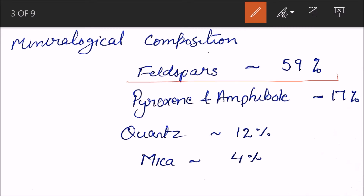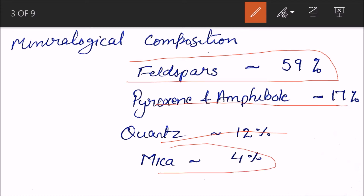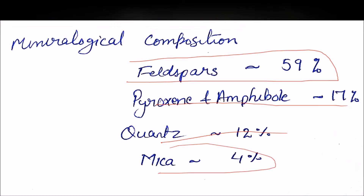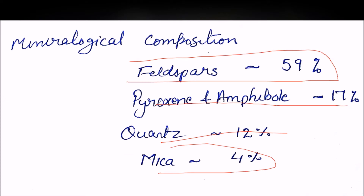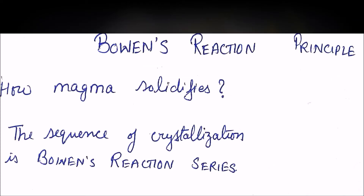For mineralogical composition, feldspar gains the highest spot with 59% — 59% of all minerals is feldspar. Then pyroxene and amphibole at 17%, quartz at 12%, and mica at 4%. That is the magma composition. Next is the Bowen Reaction Series.